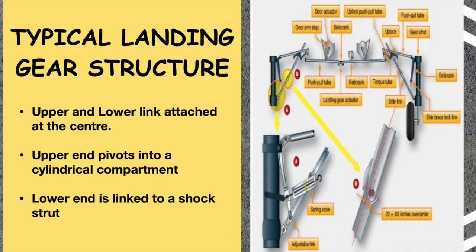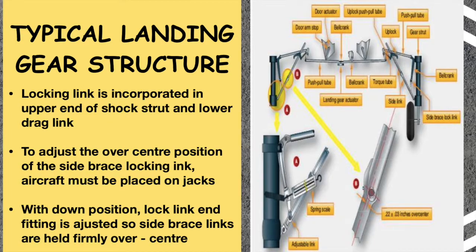A typical landing gear arrangement consists of an upper and lower link hinged at the center, which permits the brace to jackknife during retraction. The upper end pivots on a trunnion attached to structure in the wheel well overhead, and the lower end is attached to the shock strut. A locking link is incorporated between the upper end of the shock strut and the lower drag link. This locks the gear securely in the down position to prevent collapse. To adjust the over-center position of the side brace locking link, the aircraft must be placed on jacks, with the lock link adjusted so the brace links are held firmly over-center.